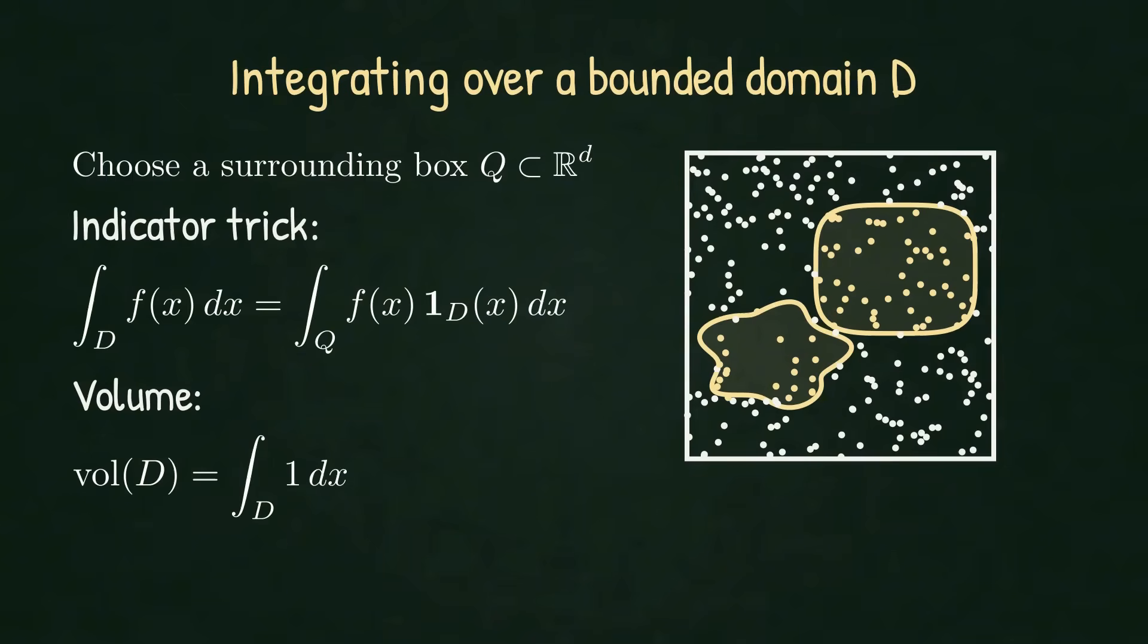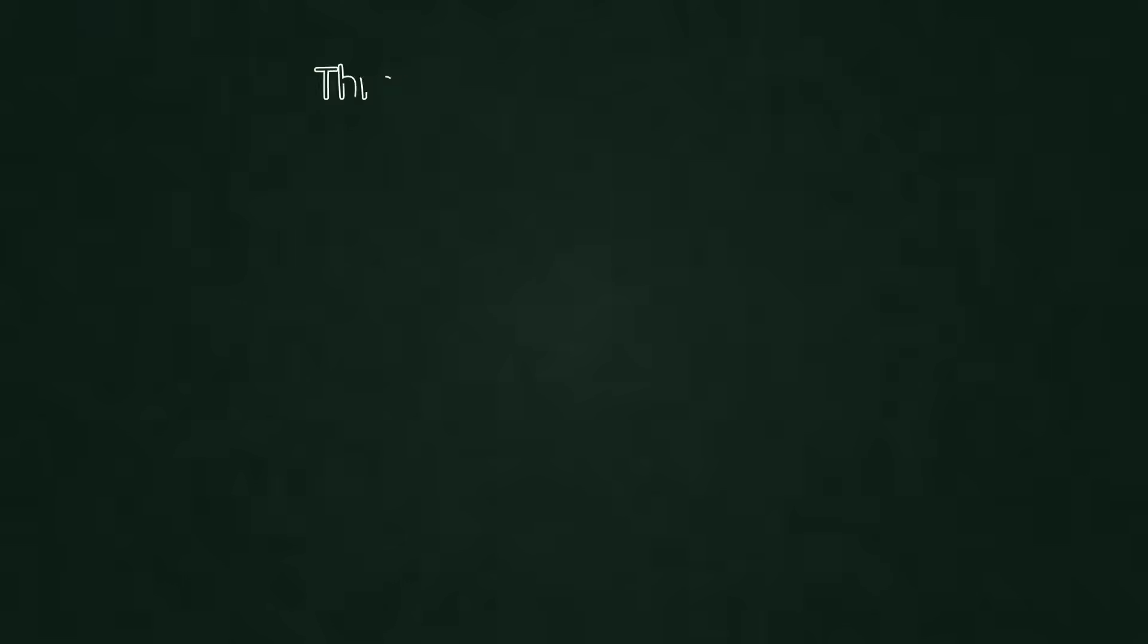Values inside D are kept. Values outside are ignored. Nothing else changes. Our averaging viewpoint now runs on Q. The indicator simply filters contributions to those that lie in D. With this, integration over any bounded region reduces to one uniform framework on a single box.